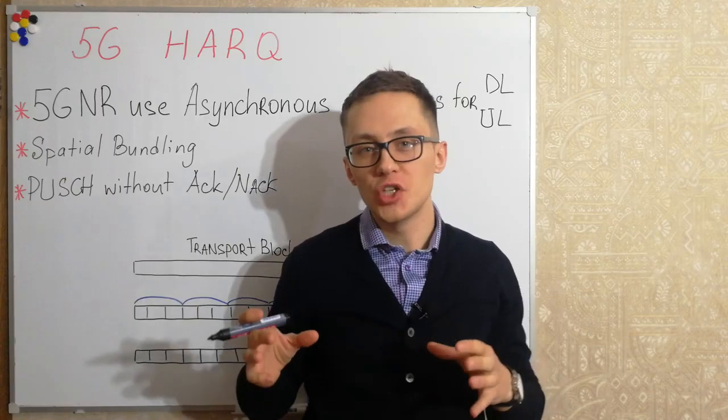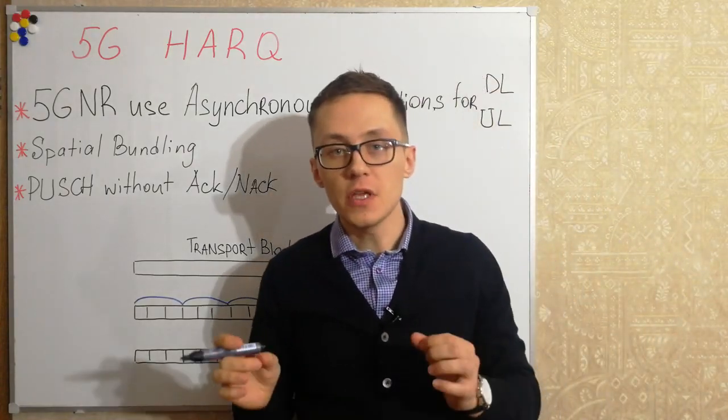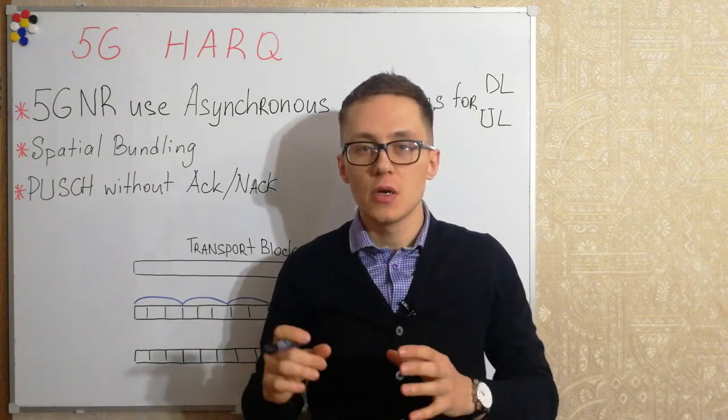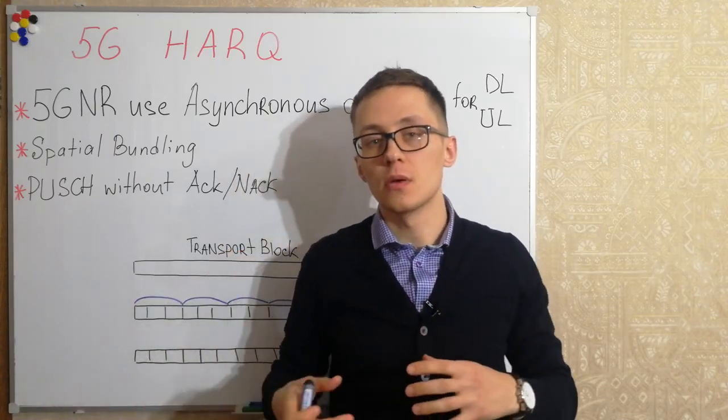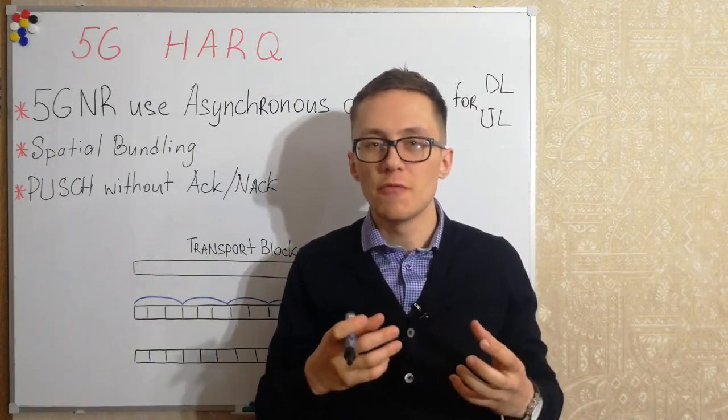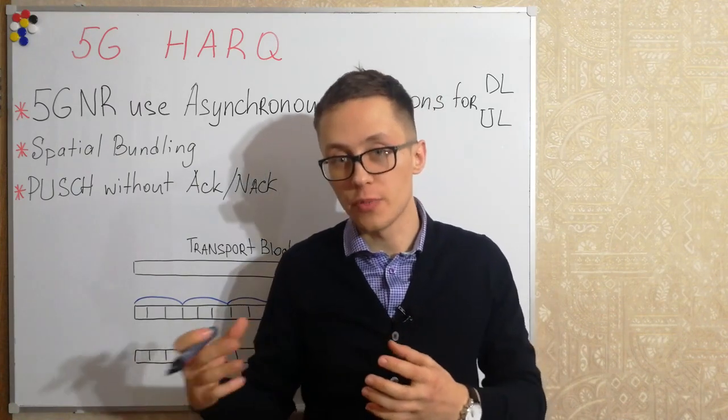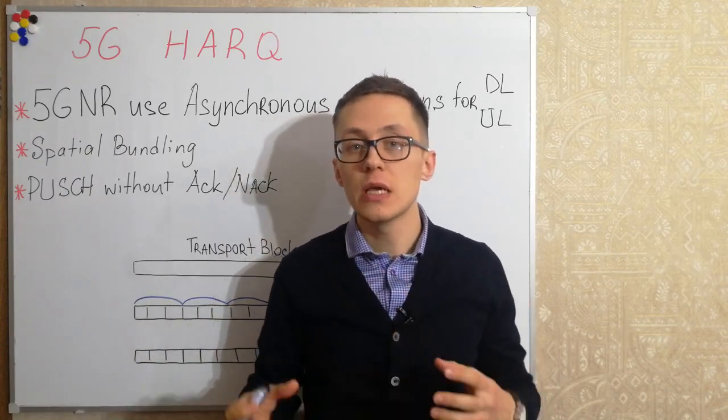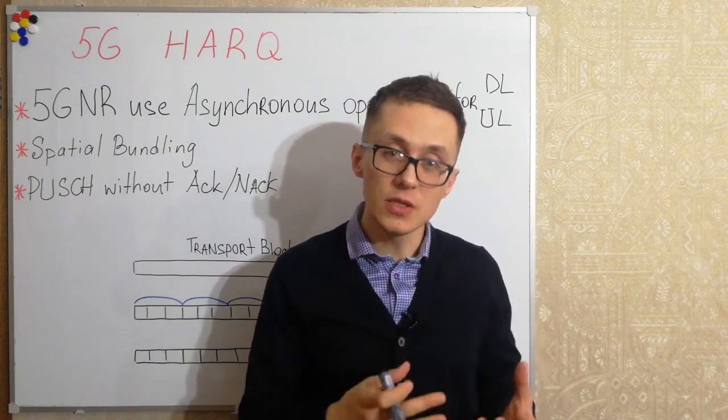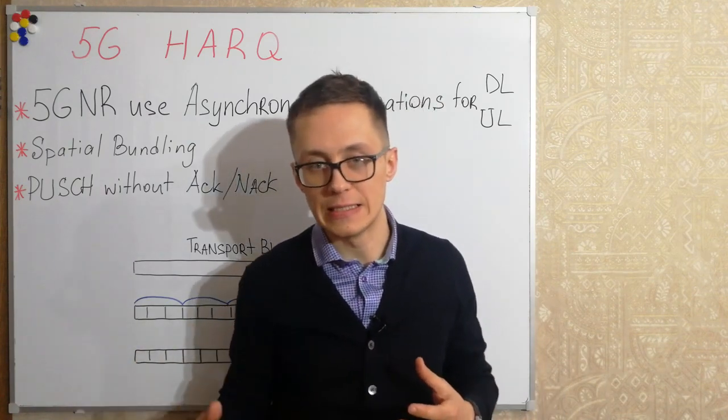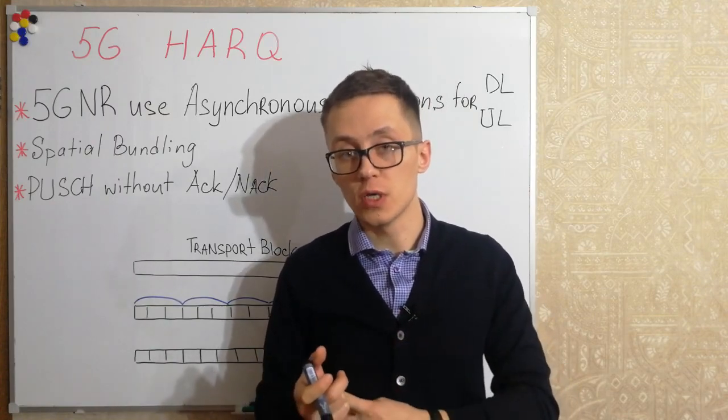There are several reasons why 5G NR use asynchronous operations for downlink and for uplink directions. The thing is that synchronous operations are not so well suitable for unlicensed spectrum because in unlicensed spectrum there is no guarantee for availability of resources and this is very important for synchronous operation of HARQ process. And the second reason, asynchronous operations can work with dynamic TDD but synchronous operations not so suitable for dynamic TDD. And we know that 5G is going to be deployed in TDD mode and is going to use unlicensed spectrum.